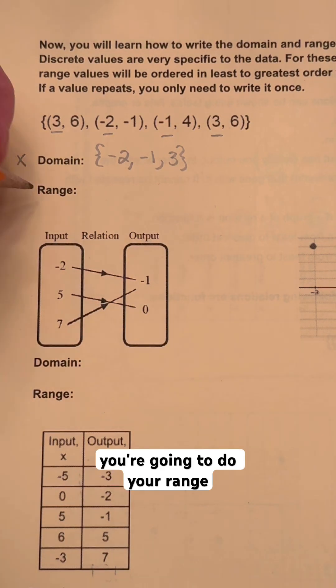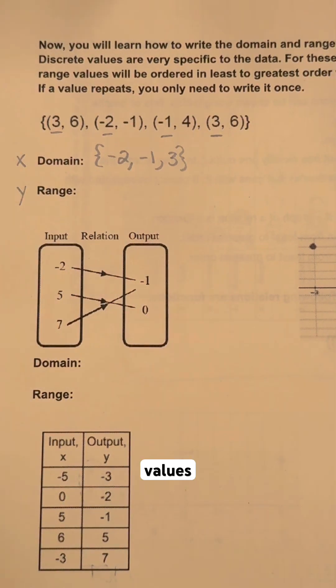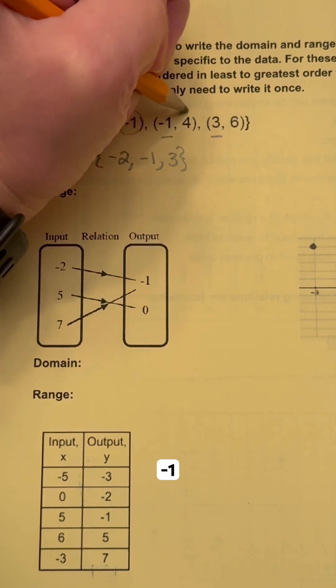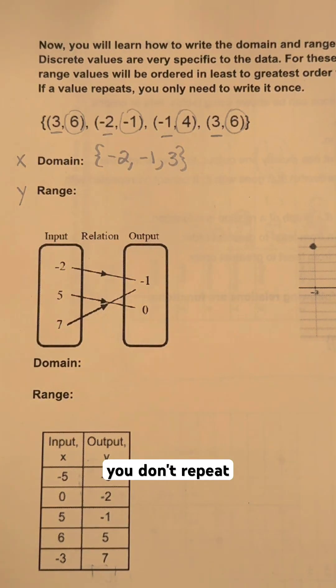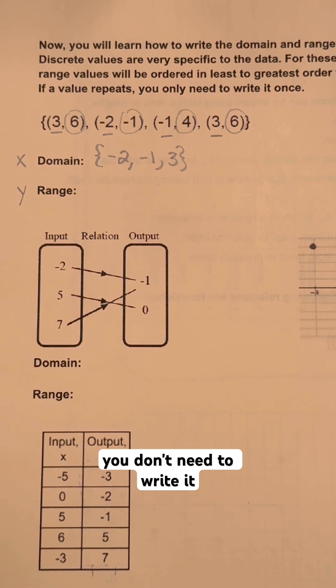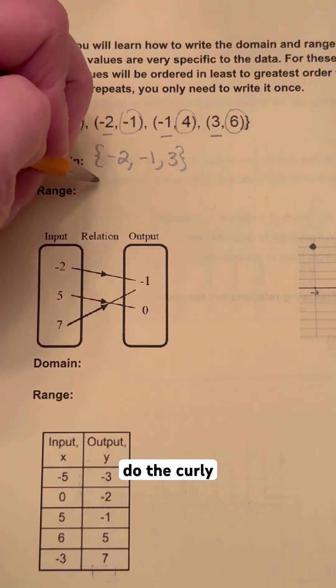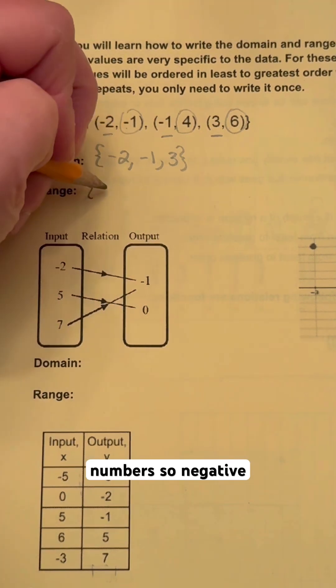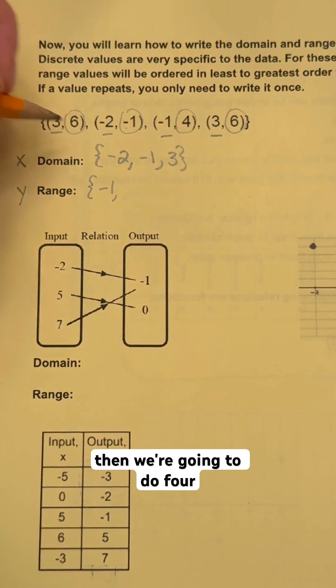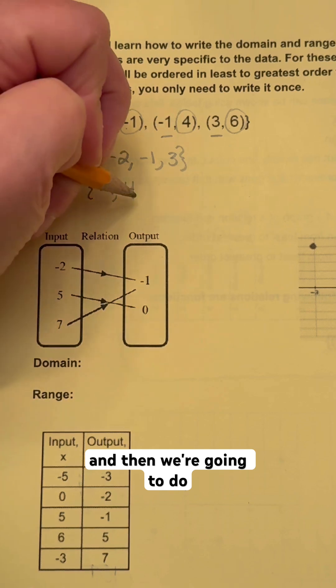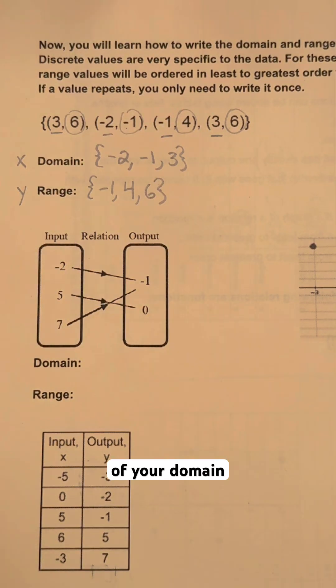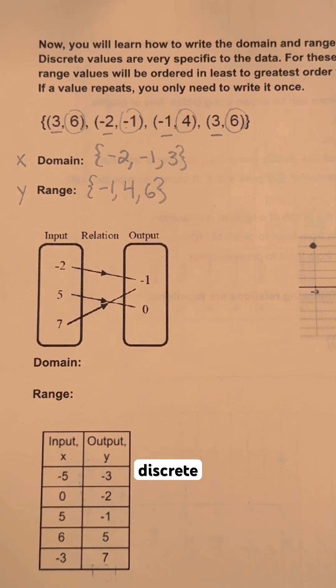Then you're gonna do your range values which are your y values, and you're gonna do the same thing. So you're gonna look at those y values which are right here, your six, your negative one, your four, and your six. Again, you don't repeat numbers. If there's one once, you don't need to write it more than once. We do the curly brackets, and then we do least numbers to greatest numbers. So negative one will go first, then we're gonna do four, and then we're gonna do six. Close your curly brackets, and that's how you do your listing of your domain and your range for discrete graphs.